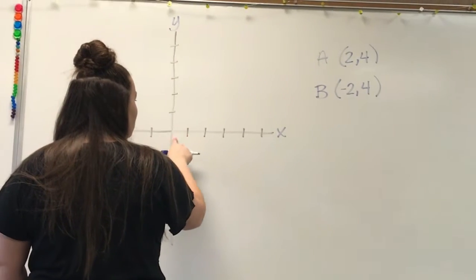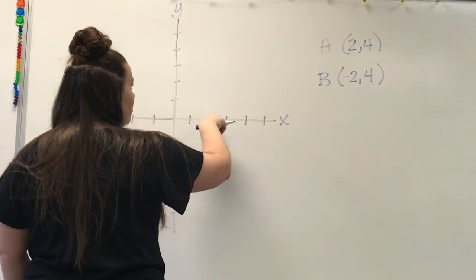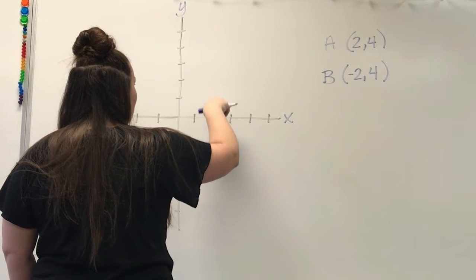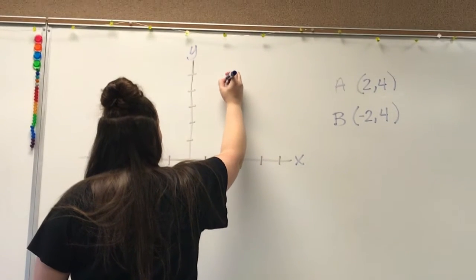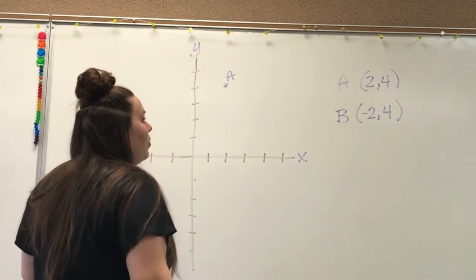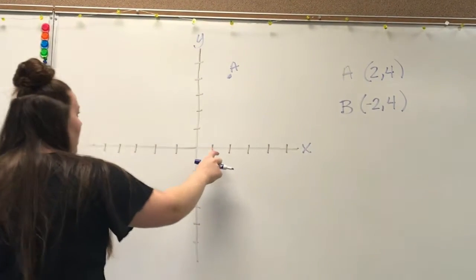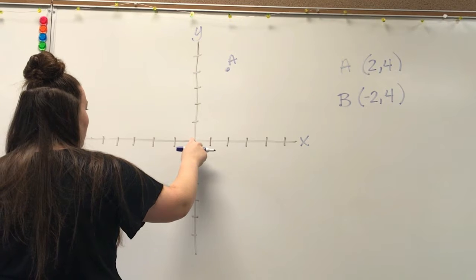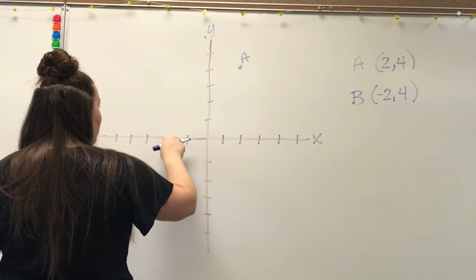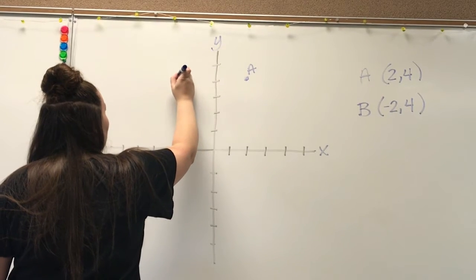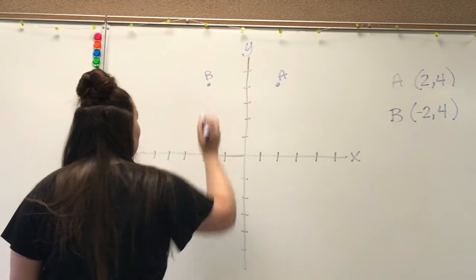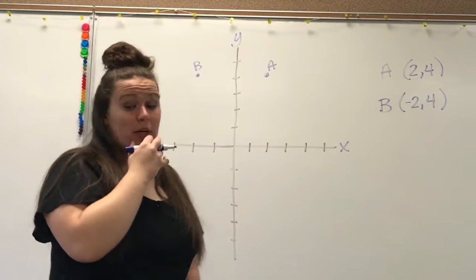Point A, jump two places or run two places, and then jump up four: one, two, three, four. This is point A. And then point B, negative two starting at my origin, one, two, and then jump four: one, two, three, four. Here is point B.